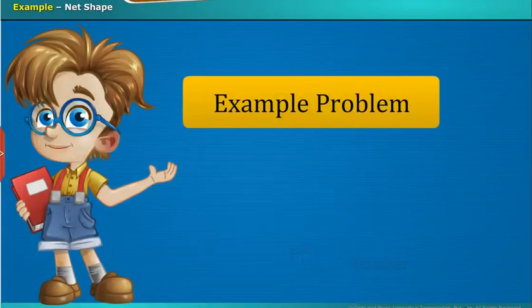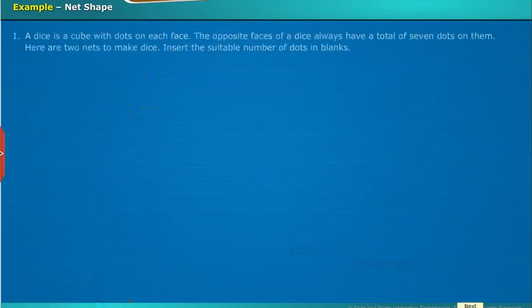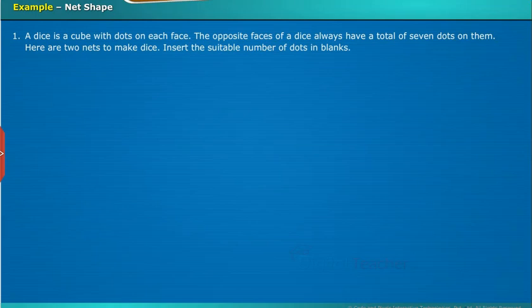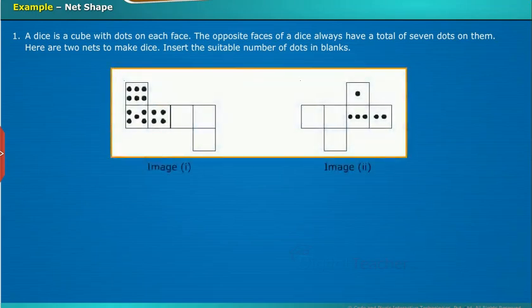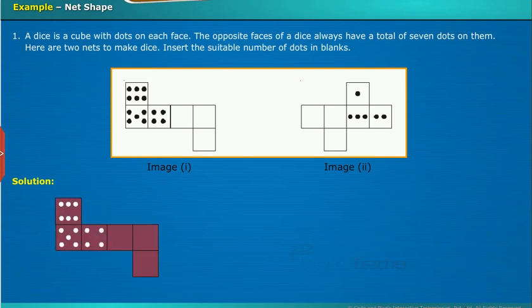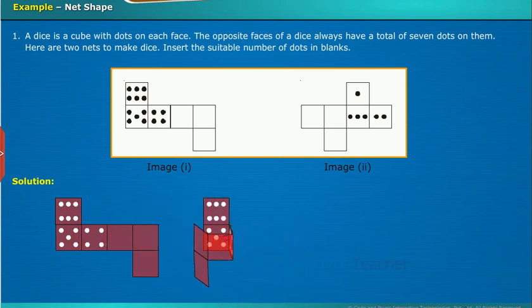Let us solve an example problem on nets of 3D shapes. A dice is a cube with dots on each face. The opposite faces of a dice always have a total of seven dots on them. Here are two nets to make dice. Insert the suitable number of dots in blanks. The solution is as follows: first take the net of image one, try to fold such that it makes a closed figure as shown. Now as we know opposite faces of the dice always have a total of seven dots on them.